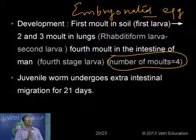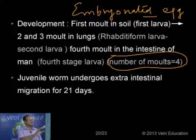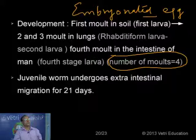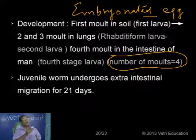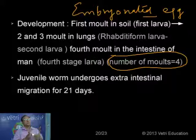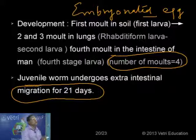The animal undergoes development and metamorphosis with four molts. The first molt is completed in the soil. Once the contaminated food is consumed, the larva reaches the intestine. The animal shows extra-intestinal migration — it reaches different organs starting from intestine to liver, liver to heart, heart to lungs, lungs to pharynx, pharynx to mouth, then through esophagus and stomach back to the intestine. The duration of extra-intestinal migration is about 21 days.